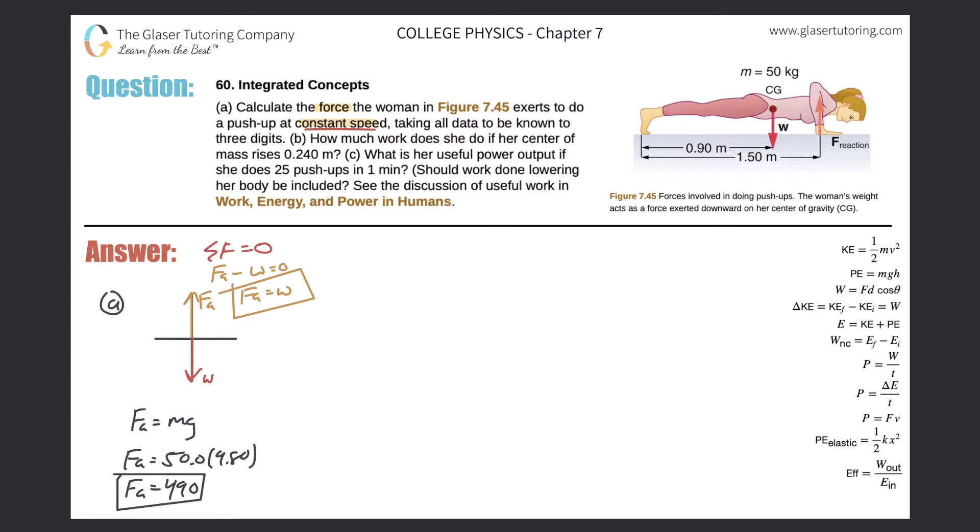Okay, so that takes care of letter A. Let's take a look now at letter B. So how much work does she do if her center of mass rises 0.24 meters? Okay, so now we're relating force and a distance to work. So which formula are we thinking about, guys? This one over here on the right, correct.